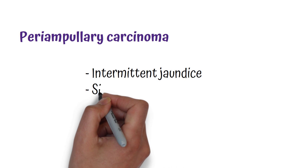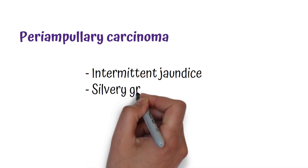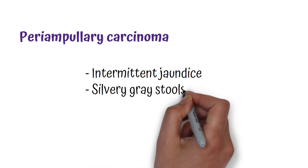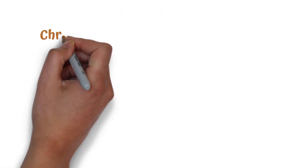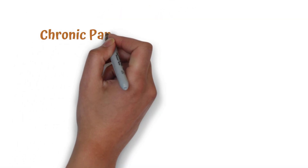In periampullary carcinoma, the patient will have intermittent jaundice and a silvery gray stool due to shedding of the tumor with blood. They will also have melena because of this shedding.